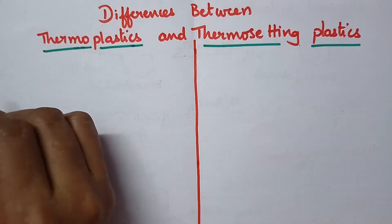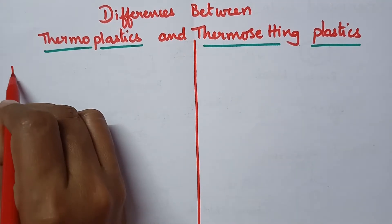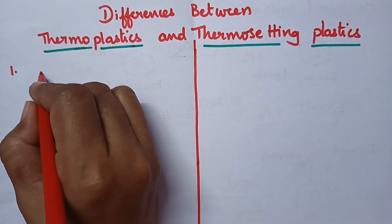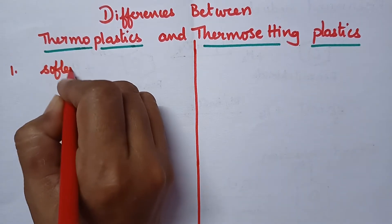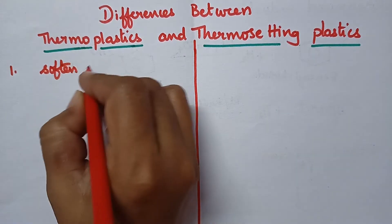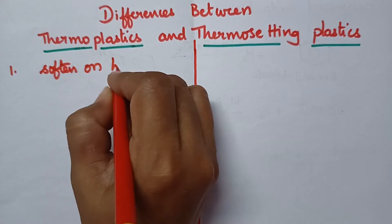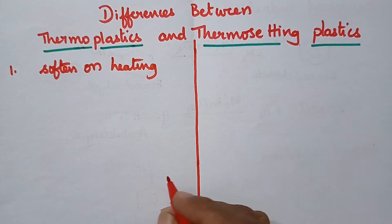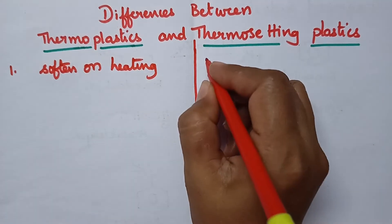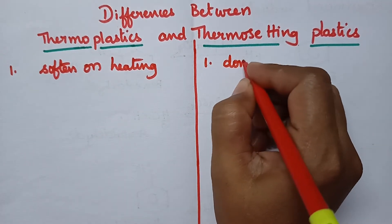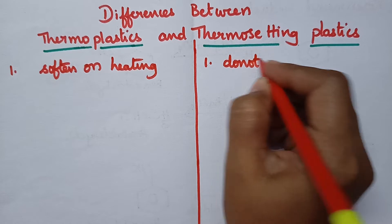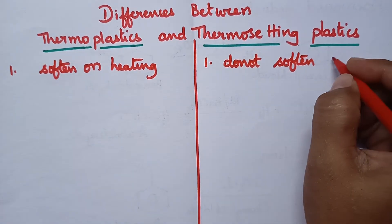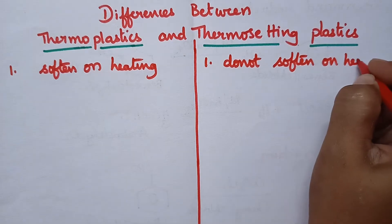Coming to the thermoplastics, they soften on heating readily. Coming to the thermosetting plastics, they do not soften on heating.